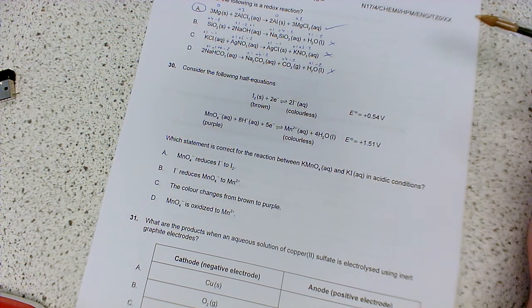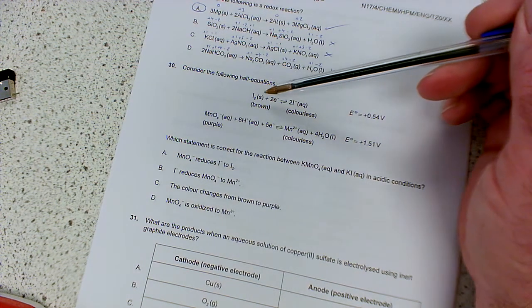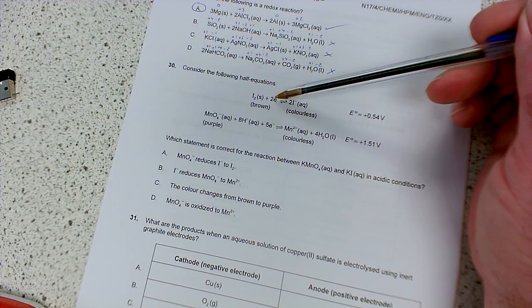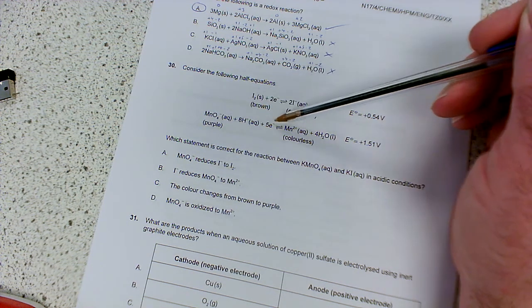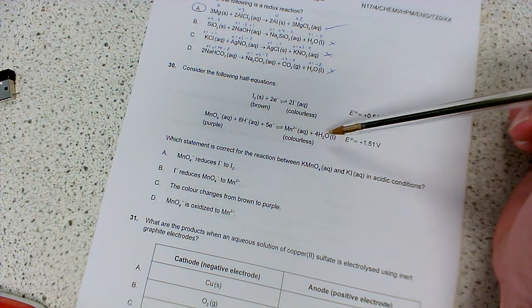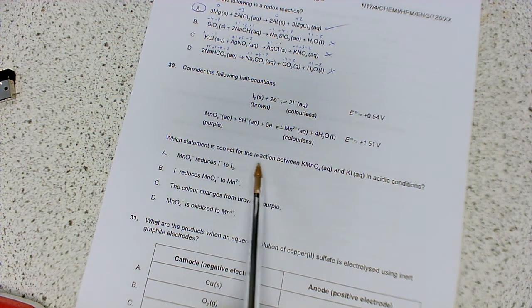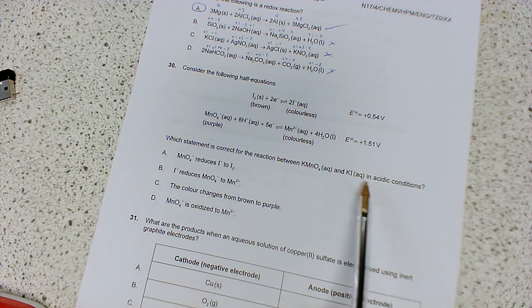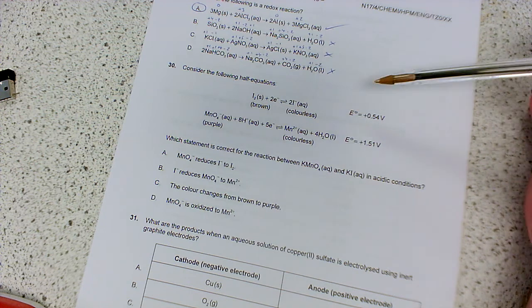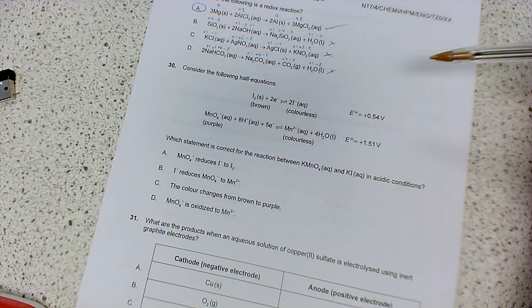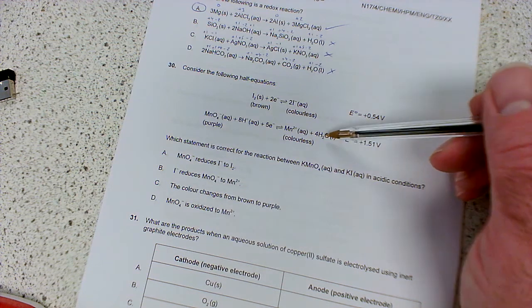And then the last one, number 30. So consider the following half equations. You've got iodine being reduced. It's gaining electrons to form iodide, and permanganate being reduced. Also gaining electrons to form manganese 2 plus, plus water. So which statement is correct for the reaction between permanganate and KI in acidic solutions? Okay, so we're going to have to reverse one of these equations. Now remember, for the reaction to be feasible, we must end up with a positive combined E cell value.